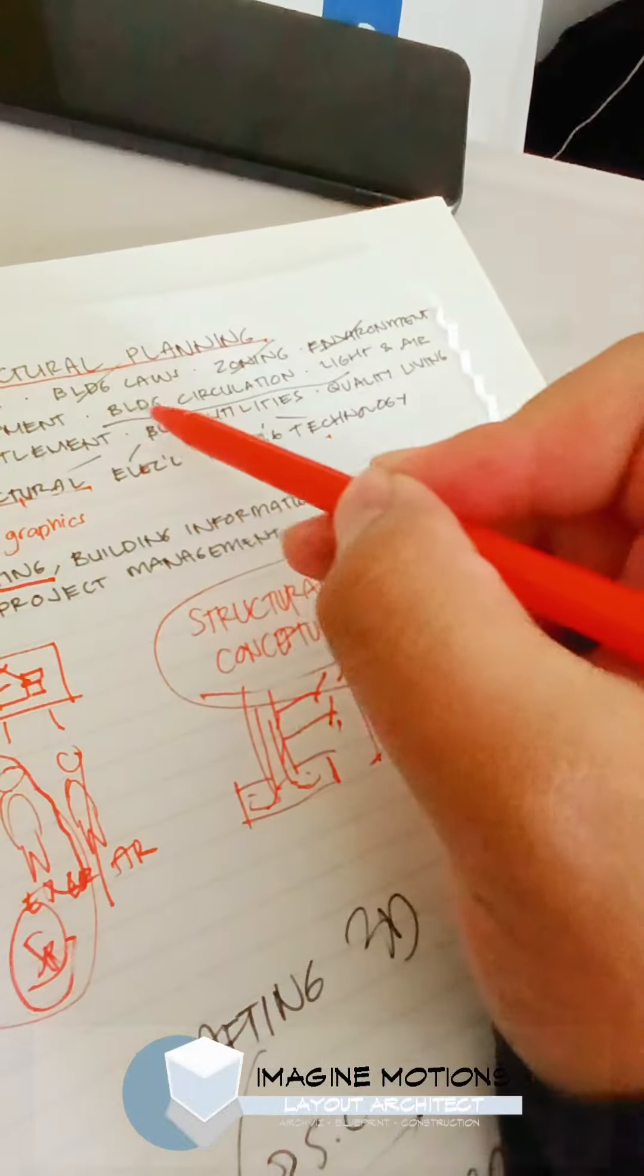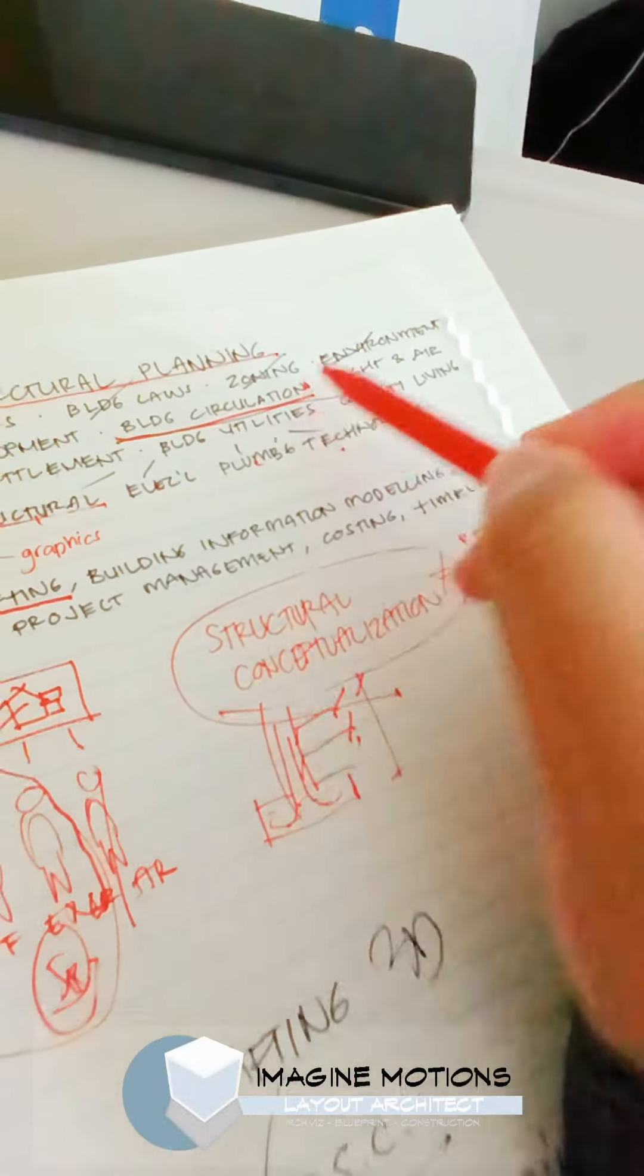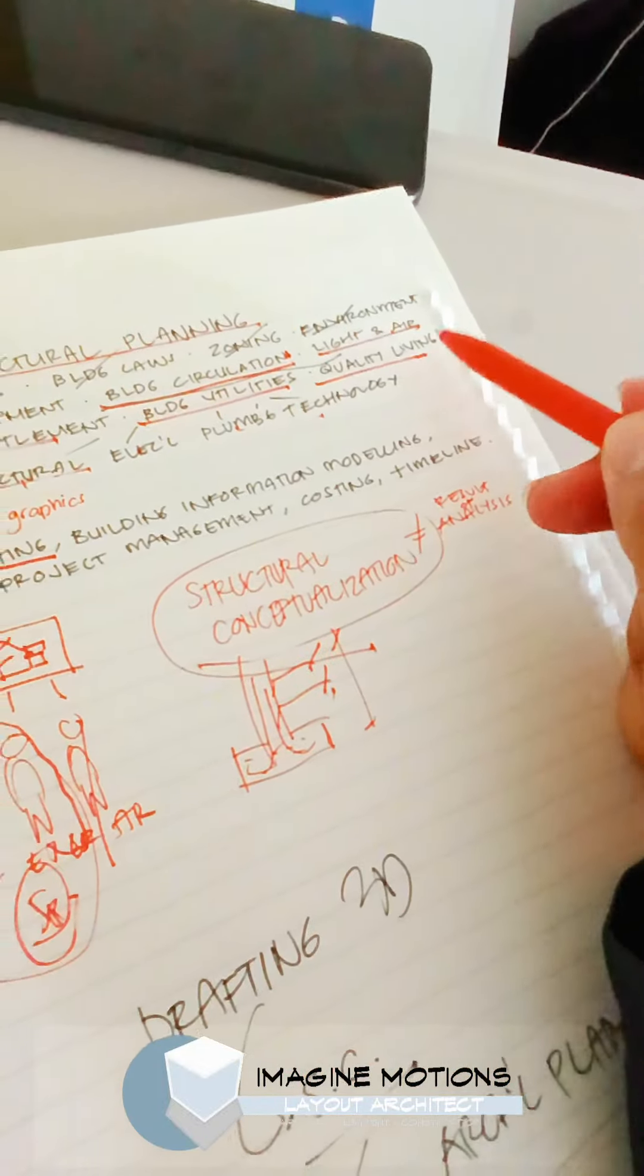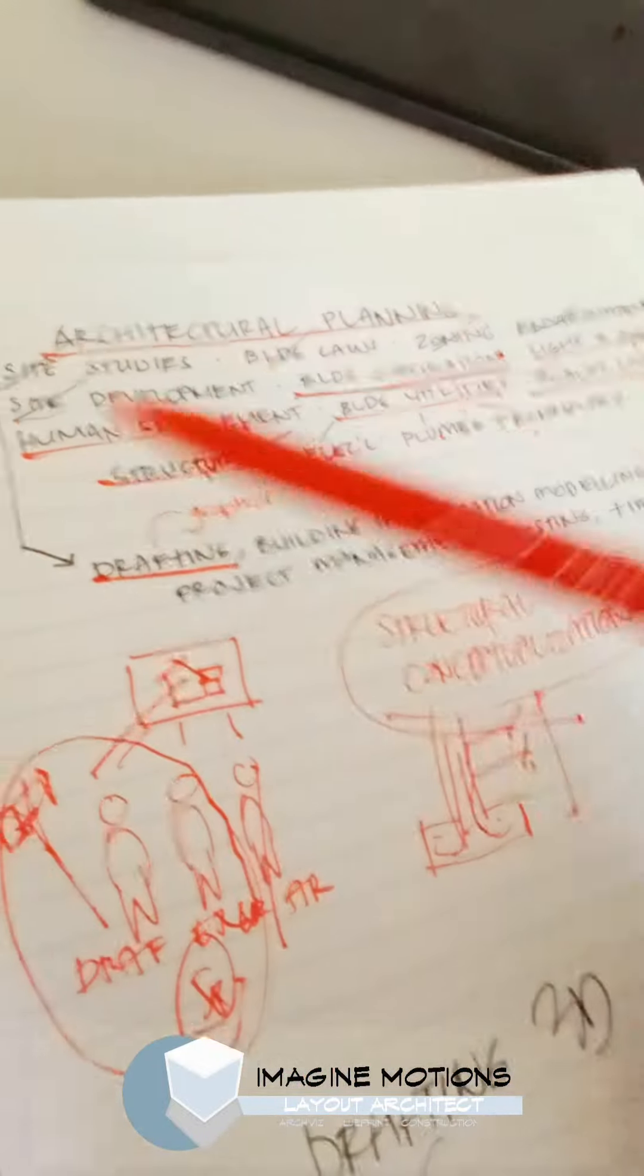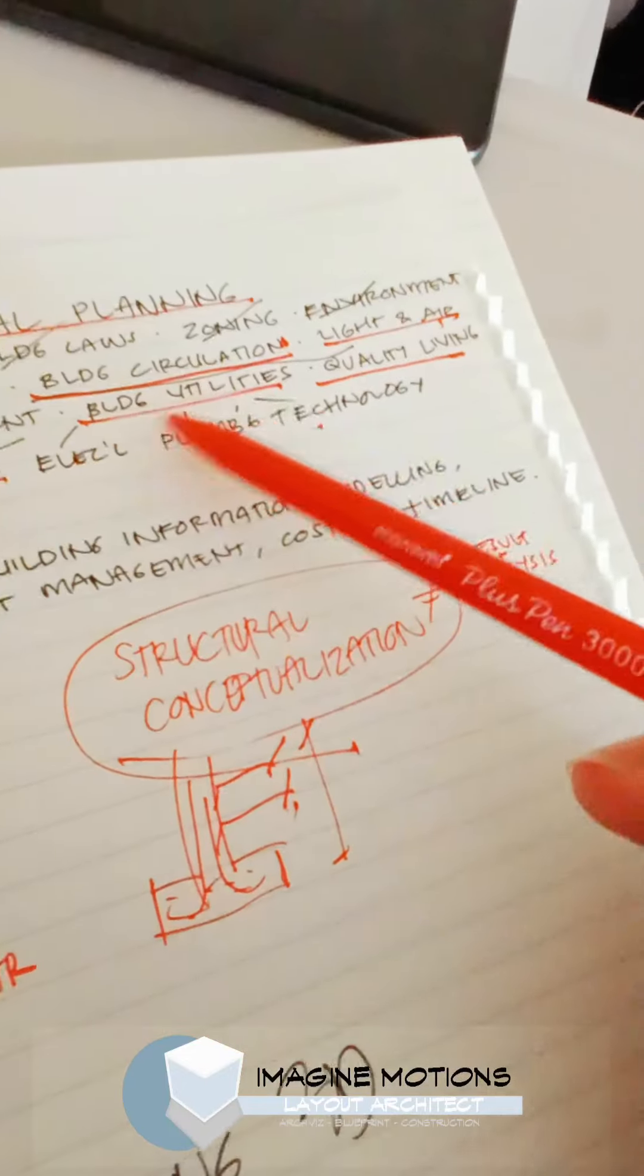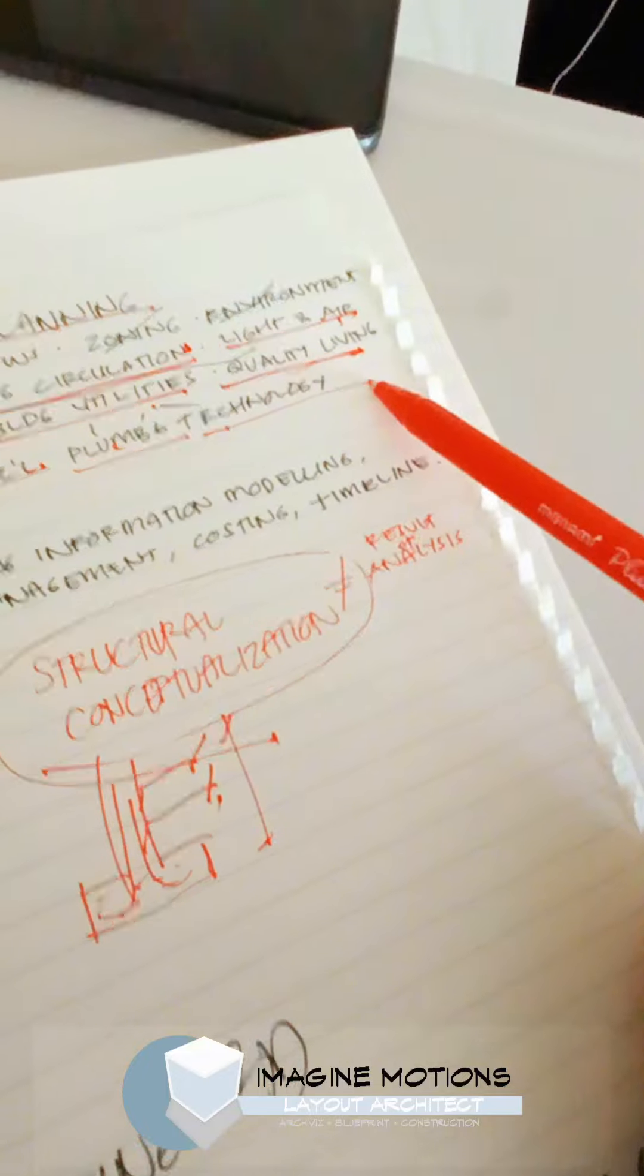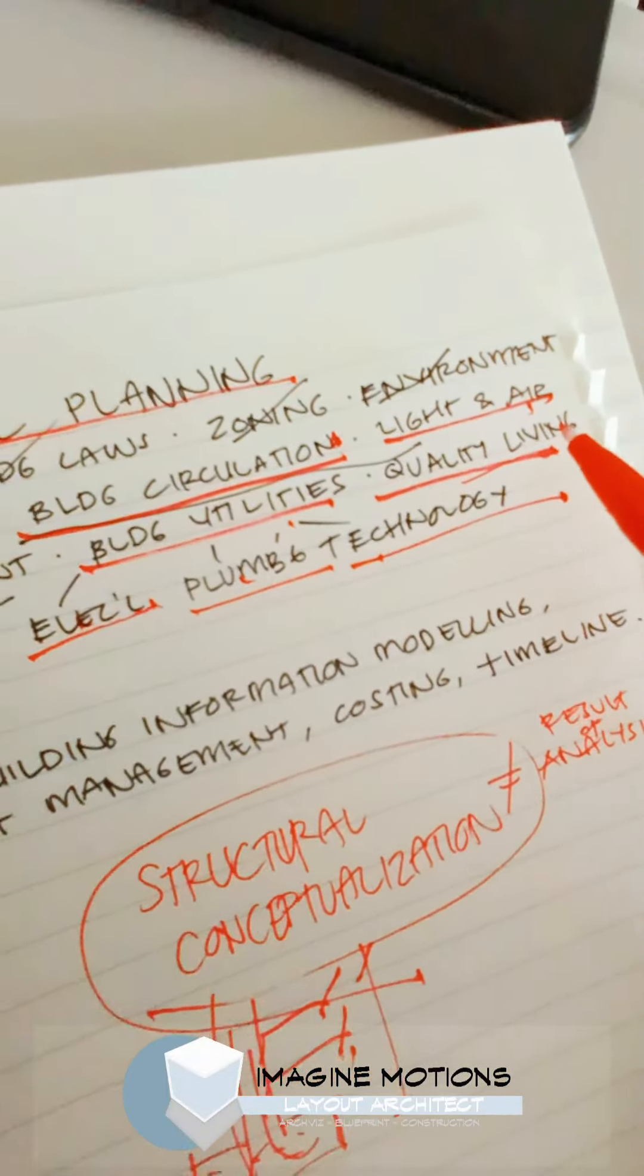Architects cannot do it one at a time, we have to consider all of them at the same time. And the best way to consider lighting and air, human settlement, building utilities, quality living, electrical, plumbing, and building technology is to do them all at the same time.